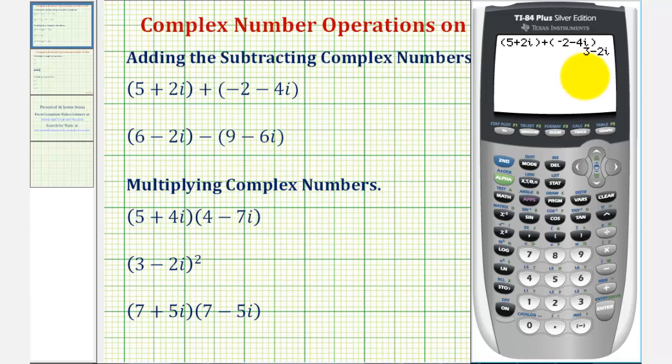Let's also find the difference, so we have six minus two i, close parenthesis, minus nine minus six i. So the difference of these two complex numbers is negative three plus four i.